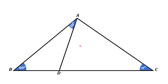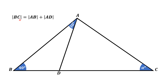In this video, we are given a triangle ABC and a line segment is drawn from A to point D on line segment BC. It is given that angle BAC is 30 degrees, angle ABD is 40 degrees, and angle ACD is alpha degrees. Moreover, it is given that the length BC is equal to the sum of lengths AB plus AD. From this limited data, we have to find the value of angle alpha.